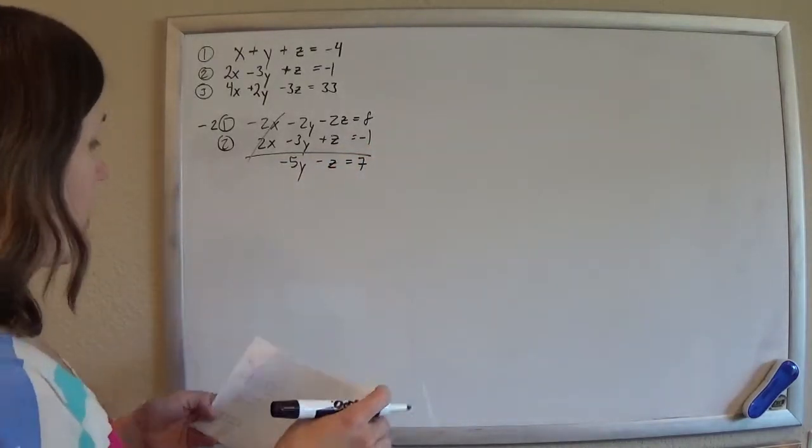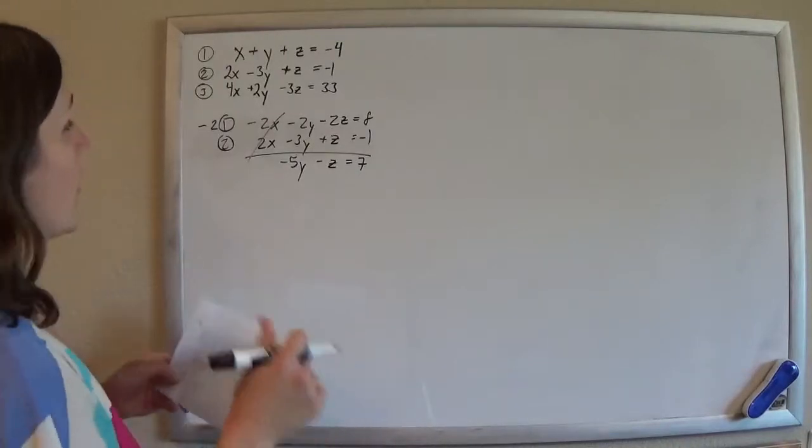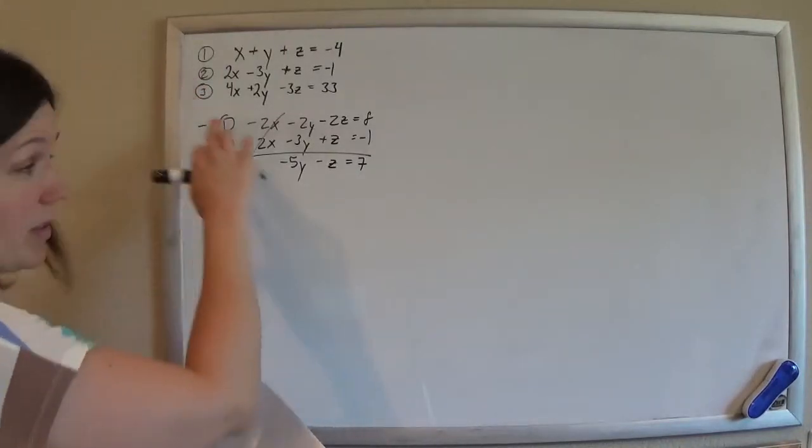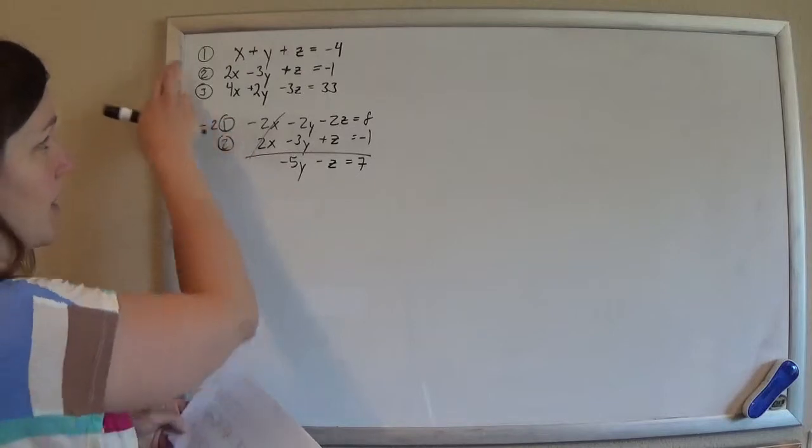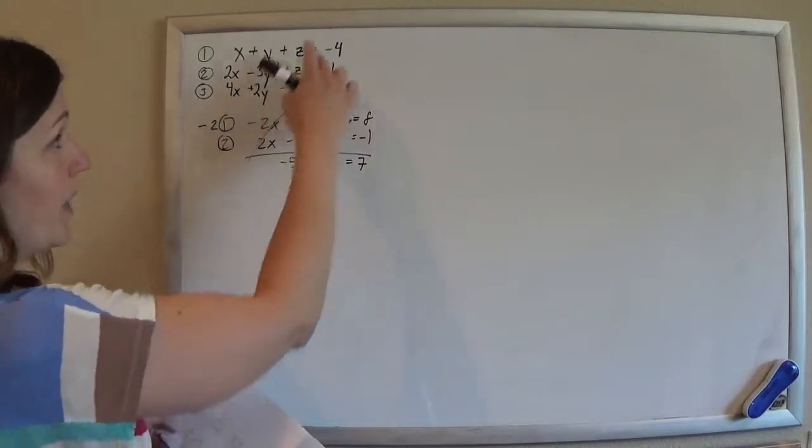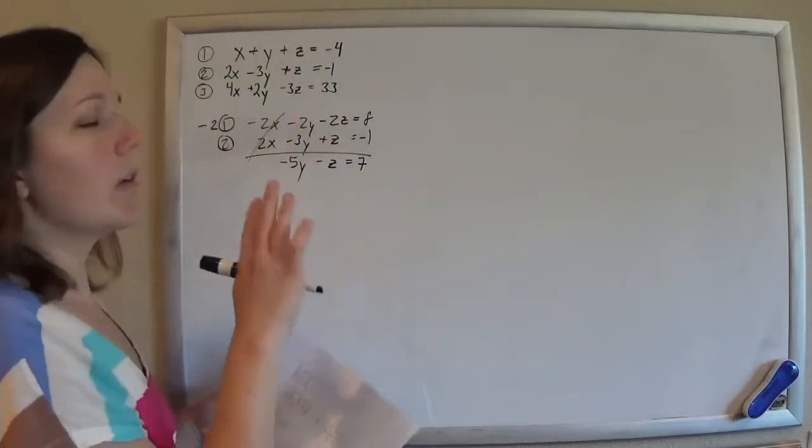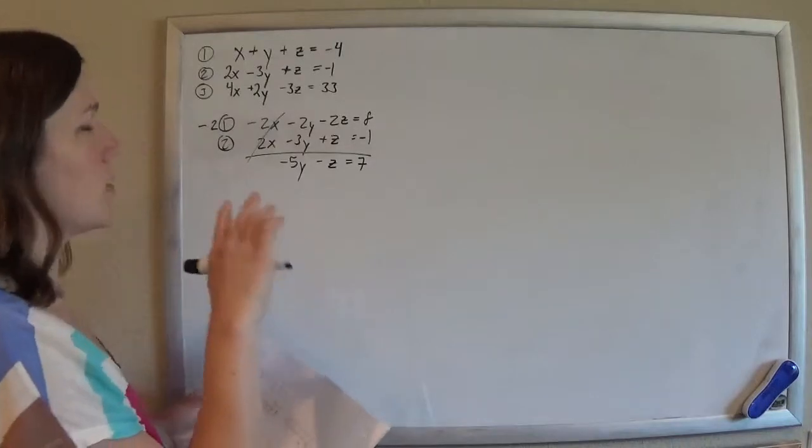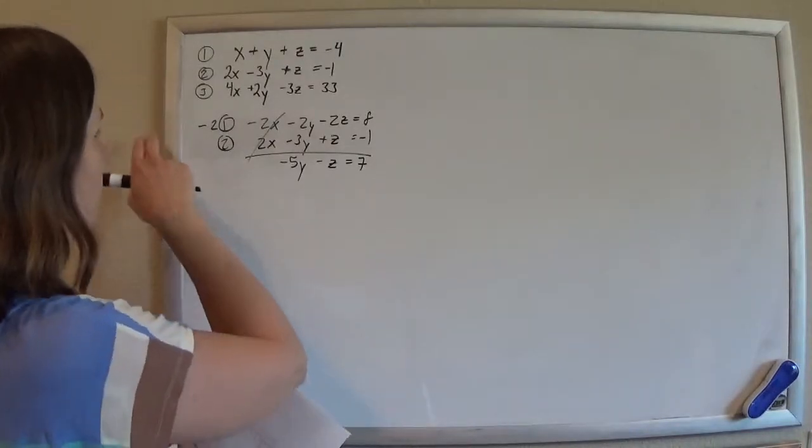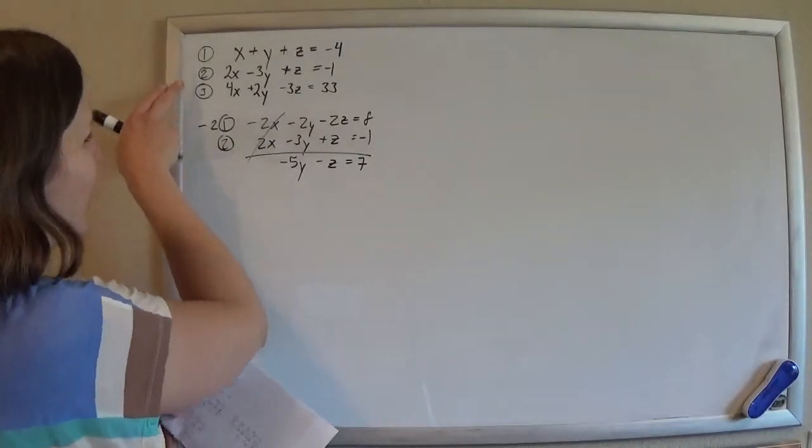We do it again. So if I got rid of the x's here, I'm going to have to get rid of the x's again. Don't be like, ooh, the z's go away now. Don't do it. I did it when I was in high school. I don't do it anymore. So you've got to get rid of the x's again.